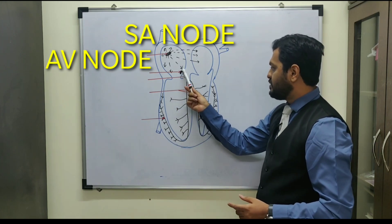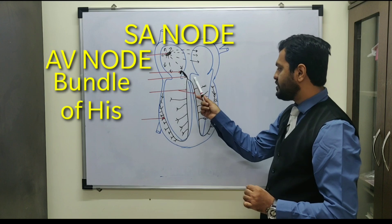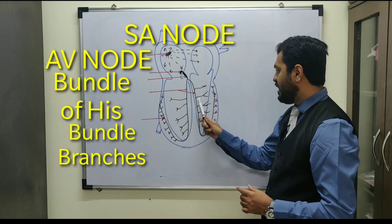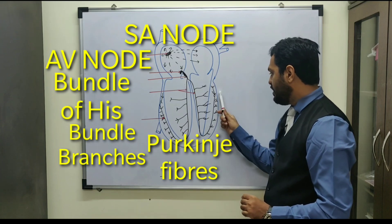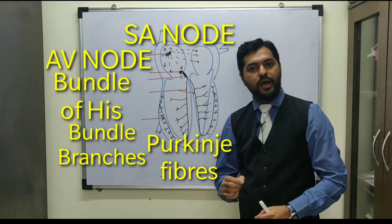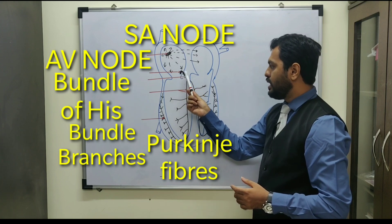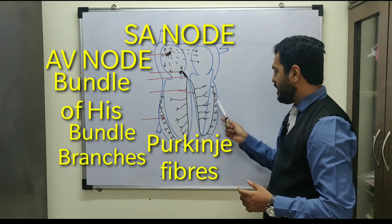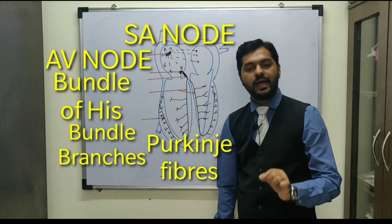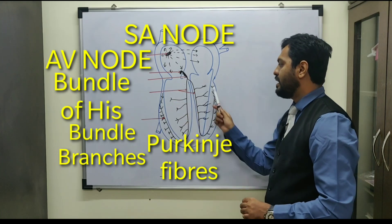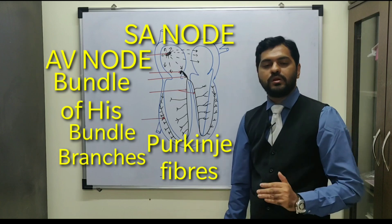From the AV node, a bundle arises known as the Bundle of His. From the Bundle of His there are left and right bundle branches, which further divide to form Purkinje fibers. These Purkinje fibers insert into the myocardium of the ventricles. So the flow is: SA node → AV node → Bundle of His → left and right bundle branches → Purkinje fibers into the myocardium. The impulse transmission from AV node through to the Purkinje fibers is responsible for the entire ventricular systole, while the SA node was responsible for atrial systole.